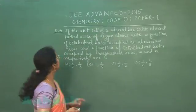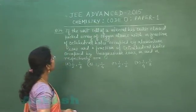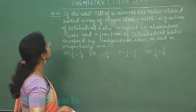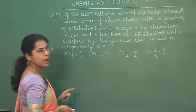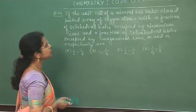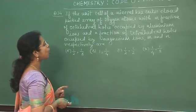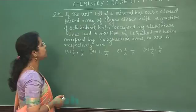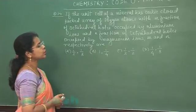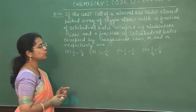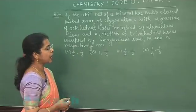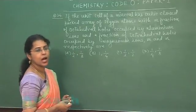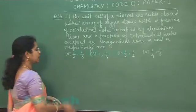Next question of this paper is question number 34. If the unit cell of a mineral has cubic close-packed array of oxygen atoms with M fraction of octahedral holes occupied by aluminium ions and N fraction of tetrahedral holes occupied by magnesium ions, M and N respectively are — and four options are given.